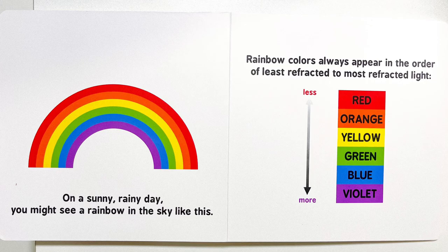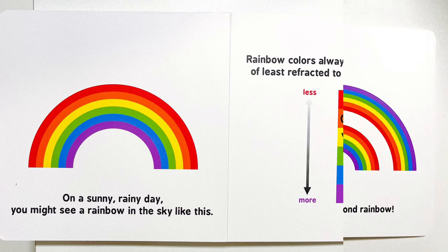Rainbow colors always appear in the order of least refracted to most refracted light: red, orange, yellow, green, blue, and violet.